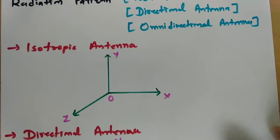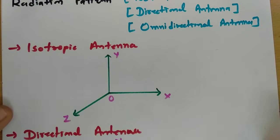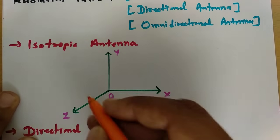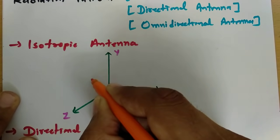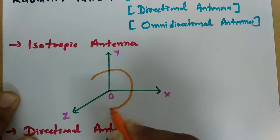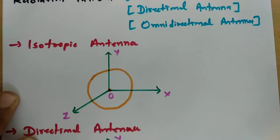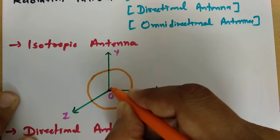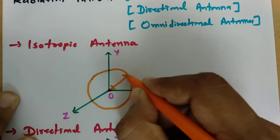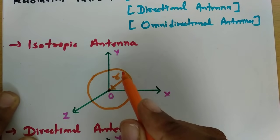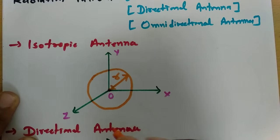When we talk about isotropic antenna, it radiates equally in all directions. So its radiation pattern looks like a sphere — it radiates equally in all directions at distance r. If we see its gain at distance r in all directions, it will be the same.